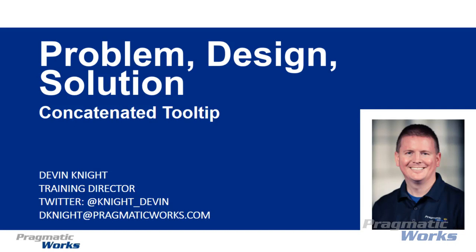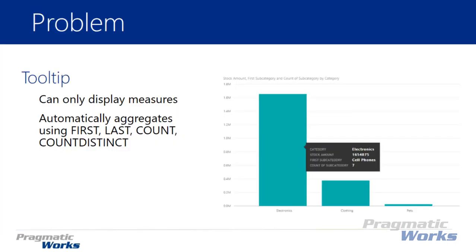In this first video, we're going to be looking at a problem having to do with tooltips. If you've worked with tooltips inside of Power BI visuals, you'll notice they look very similar to the screenshot on the right-hand side, where you can hover above something like a column chart, and within that tooltip that appears, it allows you to see some additional information about the item you're hovering above. Now there are some limitations we're going to take a look at having to do with tooltips.